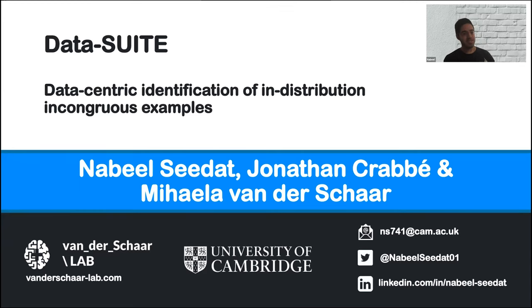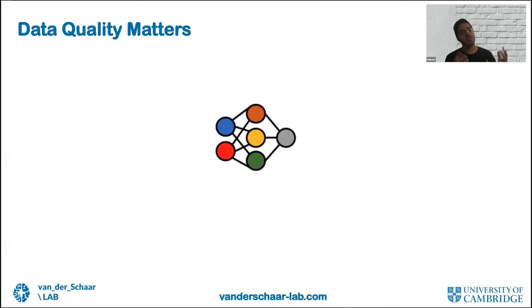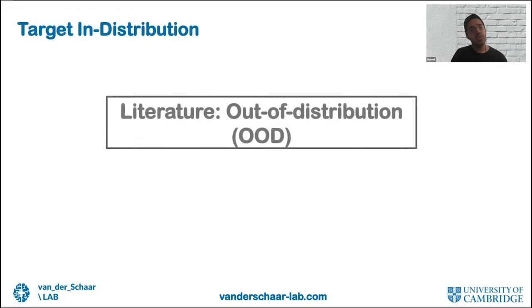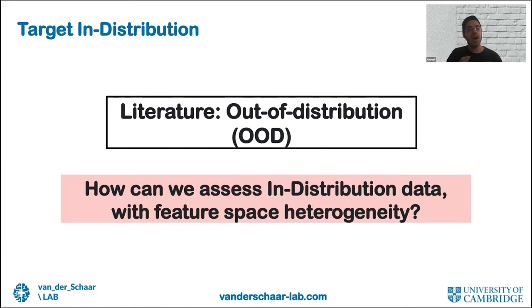Hi, good afternoon everyone. My name is Nabil Sirat and I'll be presenting DataSuite, where we look at data-centric identification of in-distribution incongruous examples — joint work with Jonathan Krabi and Mihaela van der Schaar. Machine learning models fundamentally rely on data both at training time and when we evaluate models, which is critically important when deploying in mission-critical areas such as healthcare. The adage goes: if we feed ML models garbage we'll get garbage out. The ML community has tried to mitigate this via out-of-distribution detection, but in this paper we tackle the much less studied problem of how to assess in-distribution data that may have heterogeneity in the feature space.